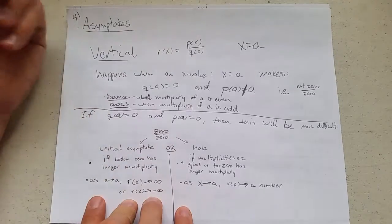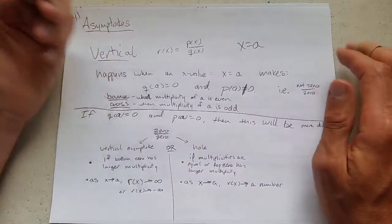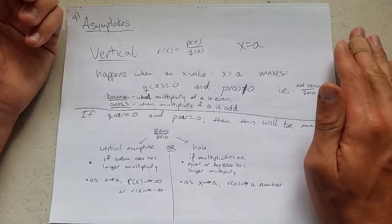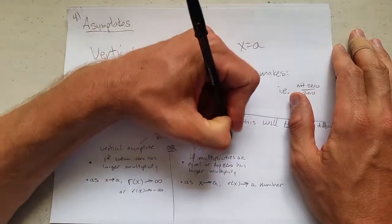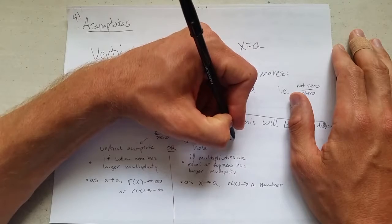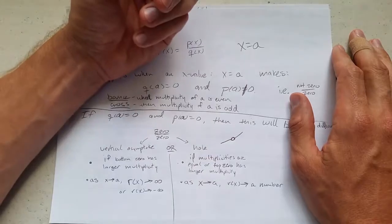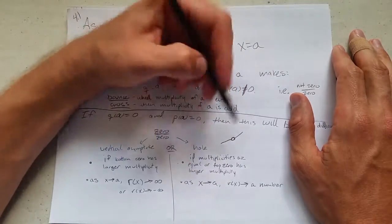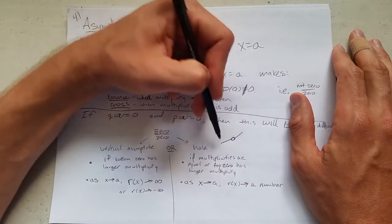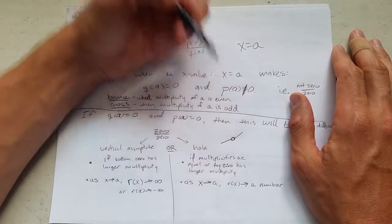You can also have a hole in the graph. Now we'll look at what the actual graphs look like, but what a hole is going to look like, instead of your graph just continuing on, there'll just be a single, like somebody took out just a single point on the graph. So this is what a hole will look like. You'll have a graph, and there'll just be a hole cut in it.